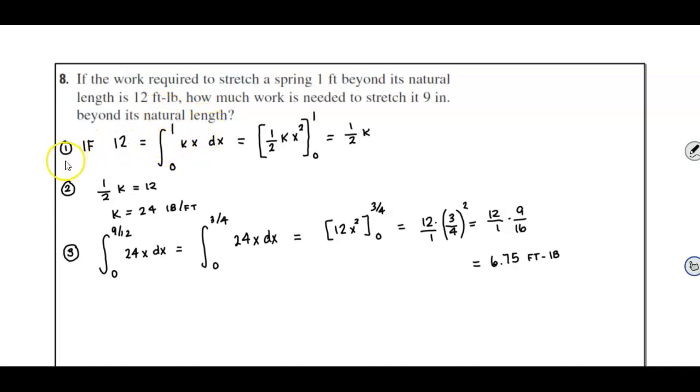So the first part of this question is that we need to determine what is k. And we know that the work that's needed is 12 foot-pounds, so we know it's going to equal 12. Now, the integral is going from zero to one because it's being stretched to one foot beyond its natural length, going from zero to one, and our function is kx dx. So what we need to do is we need to determine what is k.